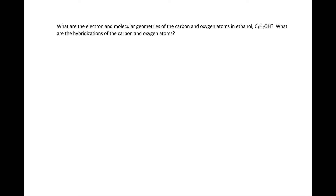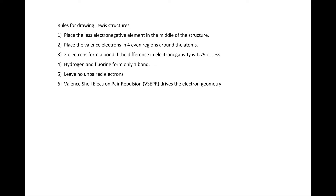To answer this question, we must first draw the Lewis structure. When drawing Lewis structures, place the less electronegative element in the middle of the structure. Place the valence electrons in four even regions around the atoms. These four even regions represent the four orbitals of the second shell. Two electrons form a bond if the difference in electronegativity is 1.79 or less. Hydrogen and fluorine form only one bond. Leave no unpaired electrons in the structure, and valence-shell-electron pair repulsion drives electron geometry.